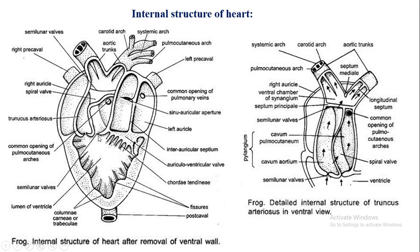The truncus arteriosus arises from the ventricle. Its opening is guarded by three semilunar valves. These valves allow the passage of blood from the ventricle into the truncus arteriosus but prevent backflow. The truncus arteriosus consists of a basal thick-walled chamber called the conus arteriosus and a distal thin-walled chamber called the ventral aorta.